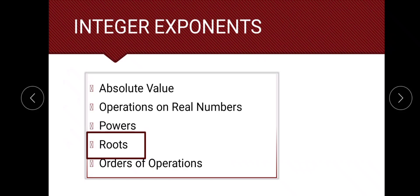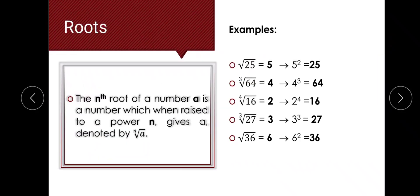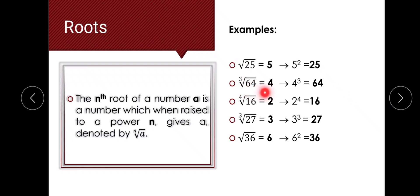Let's now have roots. The nth root of a number a is a number which, when raised to the power n, gives a. The square root of 25 is 5, because squaring 5 gives 25. The cube root of 64 is 4, because raising 4 to the power 3 gives 64.